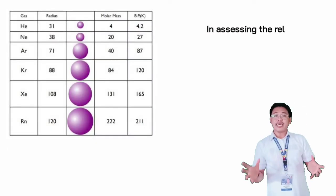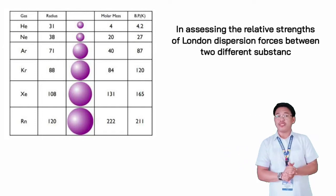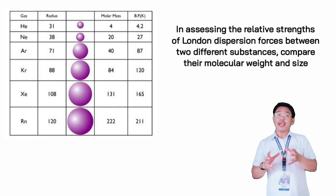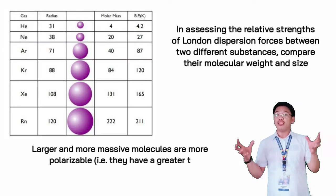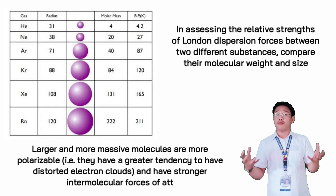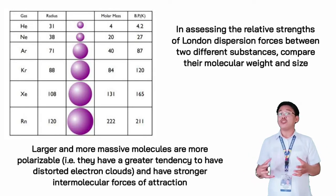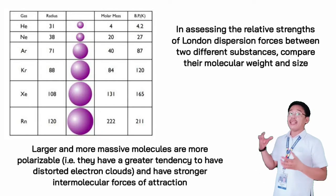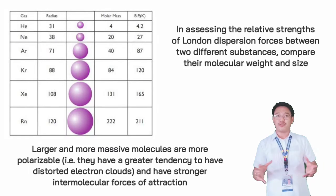In assessing the relative strengths of London dispersion forces between two different substances, compare their molecular weight and size. Larger and more massive molecules are more polarizable, meaning they have a greater tendency to have distorted electron clouds and have stronger intermolecular forces of attraction.